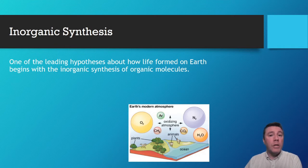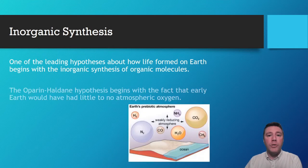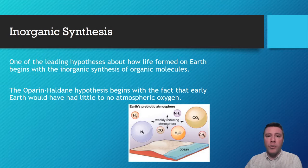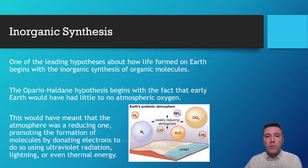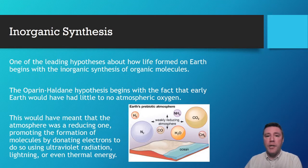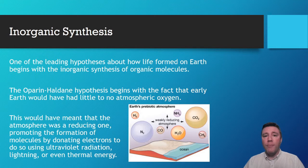But Earth's early atmosphere would have been a reducing one due to the fact that no oxygen was present. That reducing atmosphere would have lent itself well to the donation of electrons, necessary in the formation of larger and more complex molecules. They hypothesized that lightning, ultraviolet radiation, or even thermal energy could have provided the necessary energy to trigger reactions between small, simple molecules to form those relatively larger, more complex ones.